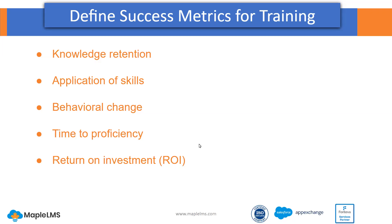Secondly, application of skills — this metric measures the extent to which trainees are able to apply the skills they learned in the training program to their job or daily life. This metric can be measured through observation or self-assessment. Also, behavioral change is a metric that measures any behavioral changes that result from the training program, such as improved teamwork, communication, or leadership skills. It can be measured through surveys or by observation — looking at the progress of an individual or their engagement within your learning programs.